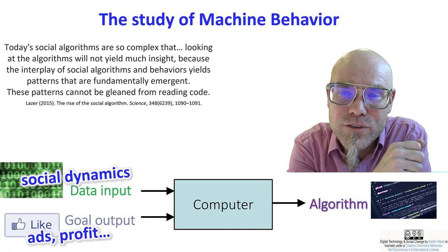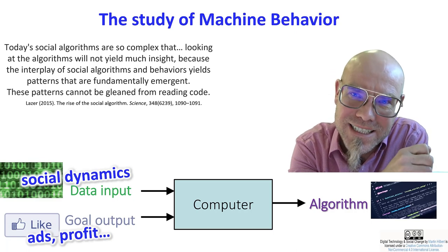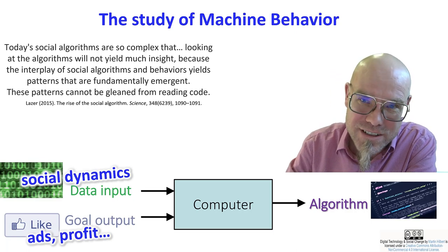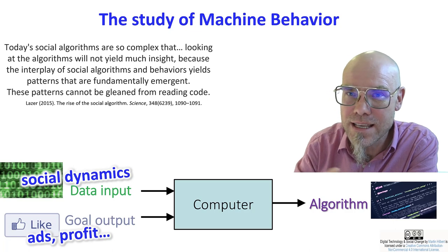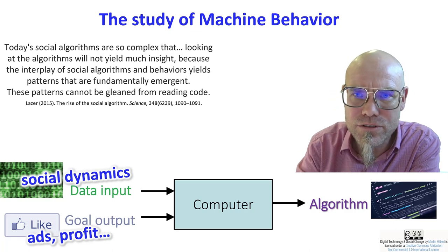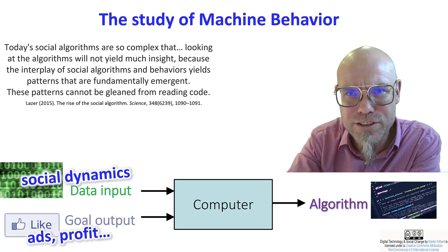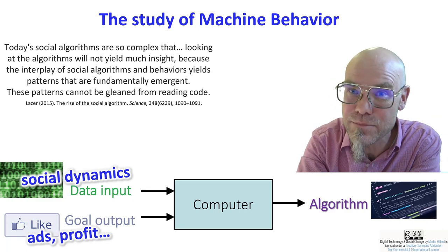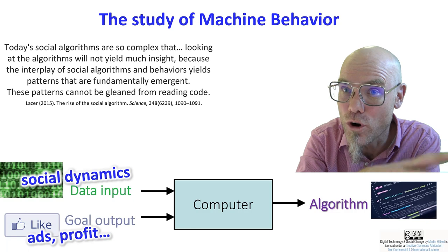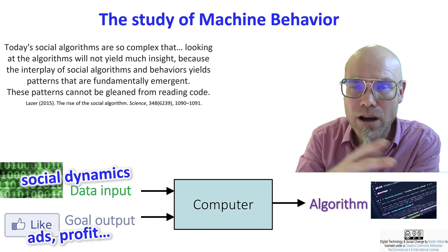And even if you have the code and you understand what it does, why? Because the algorithm interacts with social reality. The input is the social dynamics and the goal you give it, and then the algorithm mixes this together. So you cannot predict really from the code alone what happens. You also would need to know everything that happens right now with all the humans and the people.